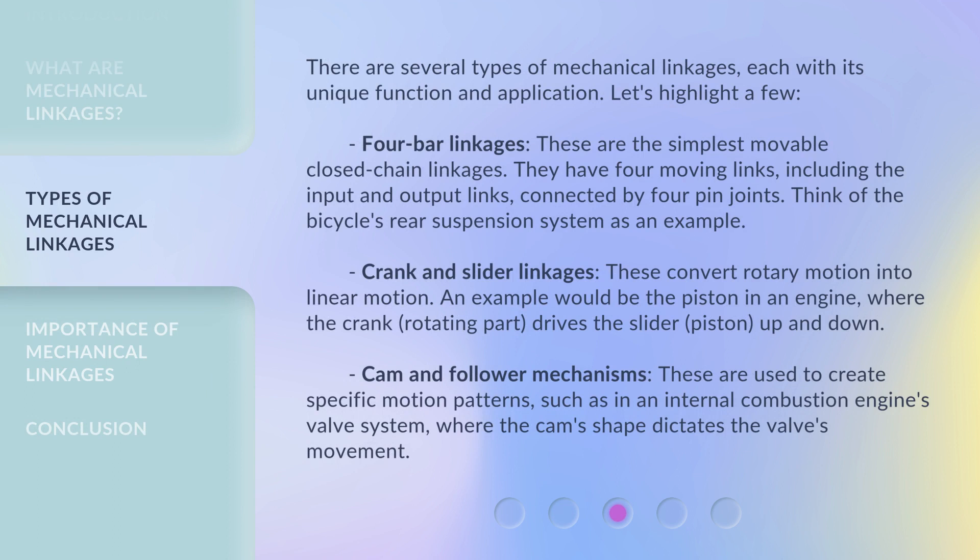There are several types of mechanical linkages, each with its unique function and application. Let's highlight a few. Four-bar linkages are the simplest movable closed-chain linkages. They have four moving links, including the input and output links, connected by four pin joints. Think of the bicycle's rear suspension system as an example.